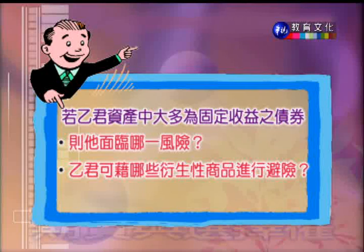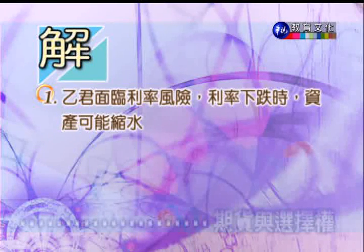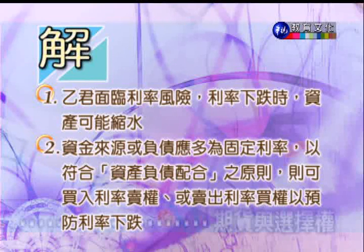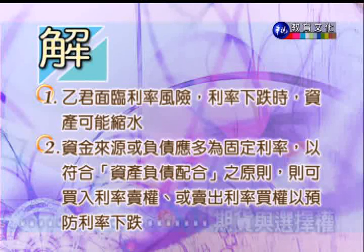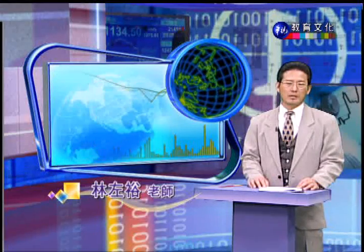这就是浮动利率对浮动利率交换的架构。我们举一个例子：假如乙君资产当中大部分是固定收益的债券，它面临了哪些风险？乙君又可以借由哪些衍生性金融商品来做避险？首先乙君面临了利率的风险，因为当利率下跌的时候，它的债券资产可能会缩水。所以它的资金来源或负债应该大部分是固定利率，以符合资产负债配合的原则。它可以买入利率的卖权，或预期盘跌时卖出利率的买权，甚至用利率交换来预防利率下跌。